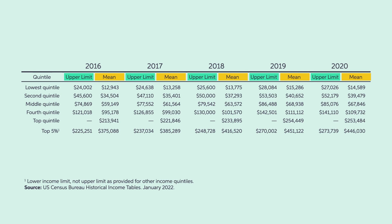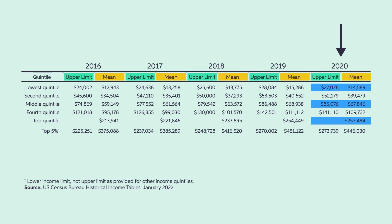Income inequality in the U.S. can easily be seen in the table. Take 2020 as an example: households in the top quintile have a mean income of over $250,000, which is more than 17 times the mean household income in the lowest quintile. Even for households in the middle quintile, largely considered the middle class, the mean income in the top quintile is still almost four times higher.